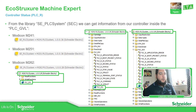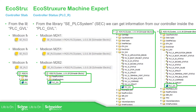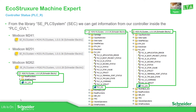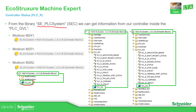Inside this library, depending on the controller, we have different folders and a structure, but there is something in common in all of them, which is this one: PLC underscore GBL. This PLC underscore GBL has a lot of information.